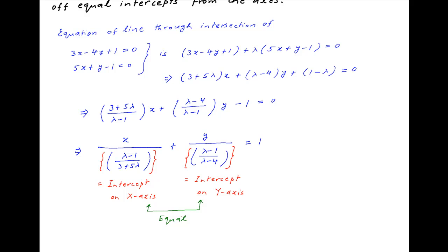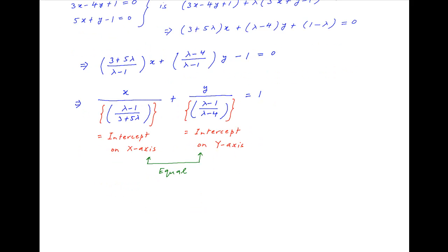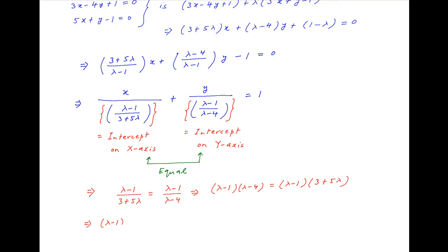We are given that both intercepts are equal, and therefore (lambda minus 1)/(3 plus 5 lambda) equals (lambda minus 1)/(lambda minus 4). Cross multiplying, we get (lambda minus 1)(lambda minus 4) equals (lambda minus 1)(3 plus 5 lambda). This implies (lambda minus 1) times [(lambda minus 4) minus (3 plus 5 lambda)] equals 0, which gives (lambda minus 1)(lambda minus 7) equals 0.